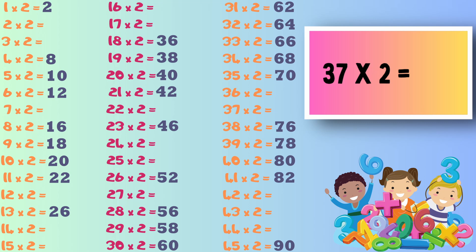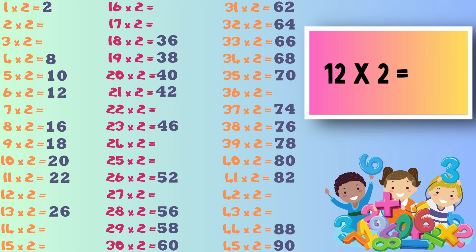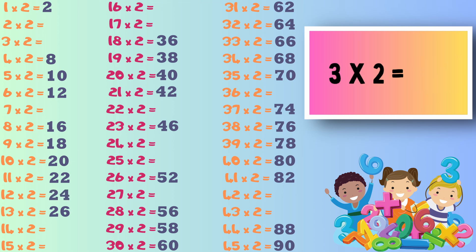Now we have 37 times 2, the answer to this one is 74. Next we have 44 times 2, the answer to this one is 88. Now we have 12 times 2, the answer to this one is 24.